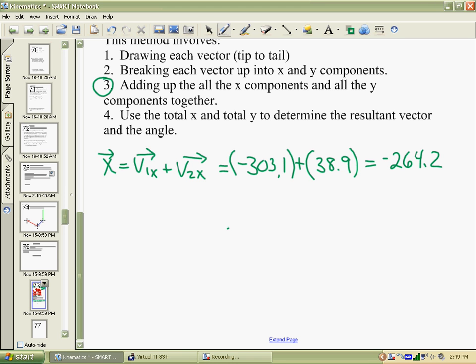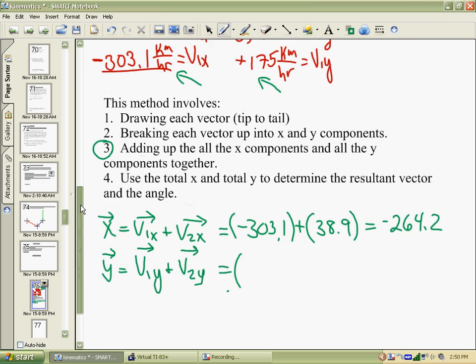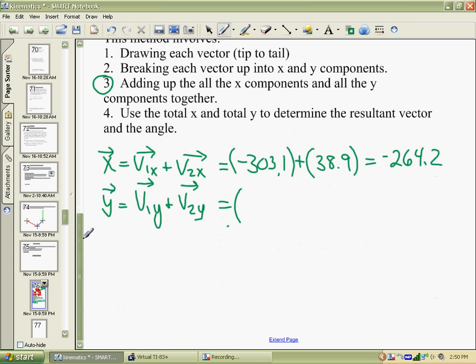We do the same for the y vectors. You have V1y and V2y. Our V1y was 175 in the positive direction, and V2y was 38.9. So that gives us 213.9. Again, these are all kilometers per hour. And that's as difficult as step three is.